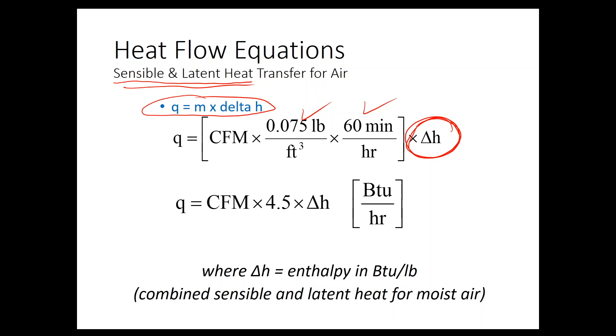And to solve this type of problem, you need to go to the psychometric charts, which are covered in a different video. But I just wanted to introduce you guys to this concept that this is the equation that you would use. Notice it's 4.5 times delta H. Again, it's a Q equation, so it's got BTU per hour. But you're going to have to go to the psych chart to get this value.